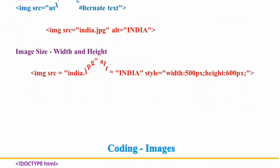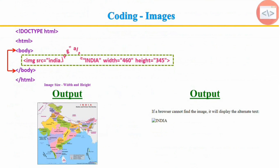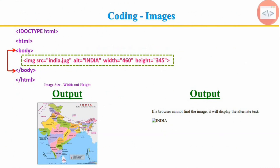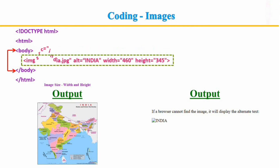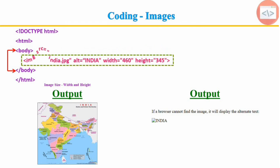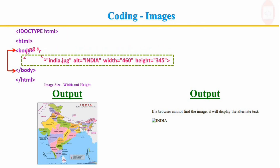If you want to give some height and width to display the image, you can use the height and width attributes. The above code will display the indiamap image. If the image cannot be loaded for some reason — like a network error, content blocking, or link rot — the alternative text will be displayed on the page.